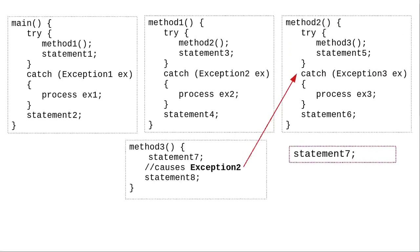Now let's say method 3 does statement 7 and then causes an exception of type exception 2. Again, it terminates immediately and throws the exception to its caller, method 2. Method 2 doesn't catch exception 2, so it also terminates immediately and throws the exception to its caller, method 1.